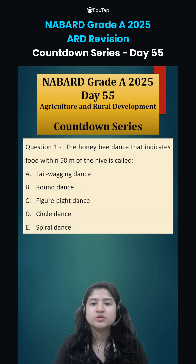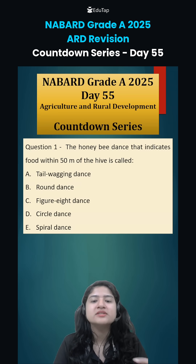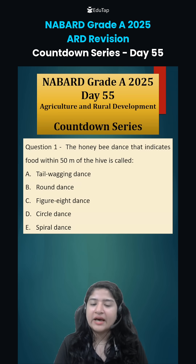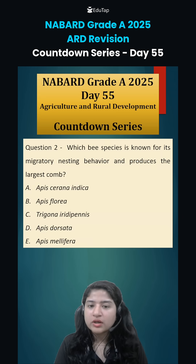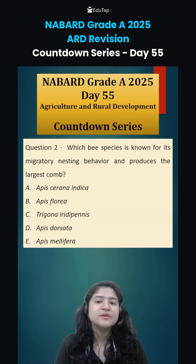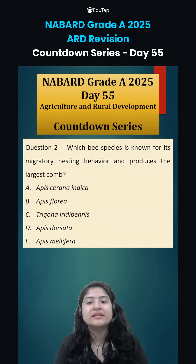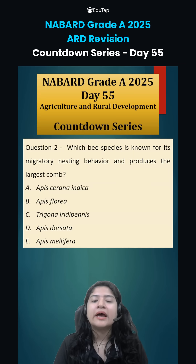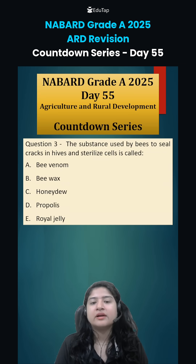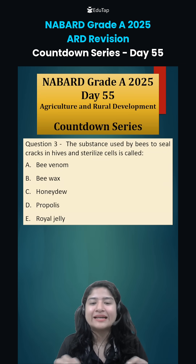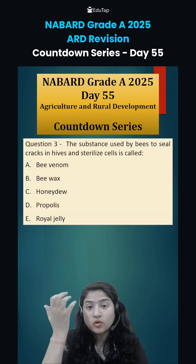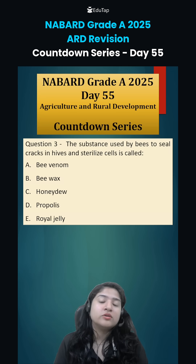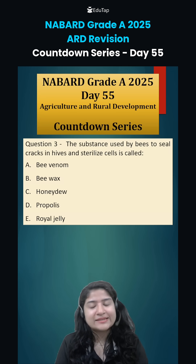Coming to today's questions. Question number one: the honeybee dance that indicates food within 50 meters of the hive is known as what? Question number two: which honeybee species is known for its migratory nesting behavior and produces the largest comb? Question number three: the substance used by bees to seal cracks in hives and sterilize cells is known as what? Comment down the answers and we will discuss it in the next class.